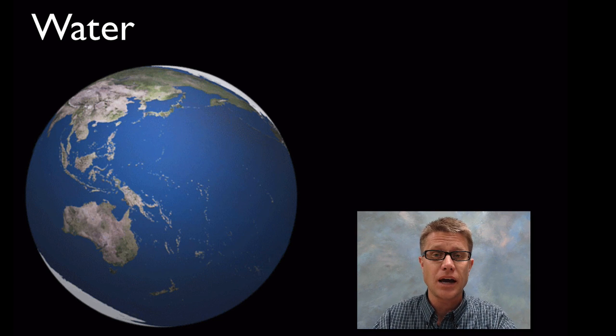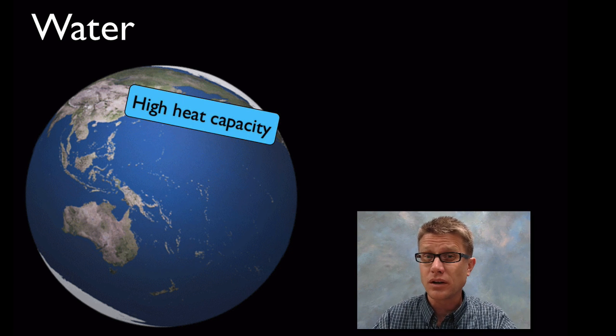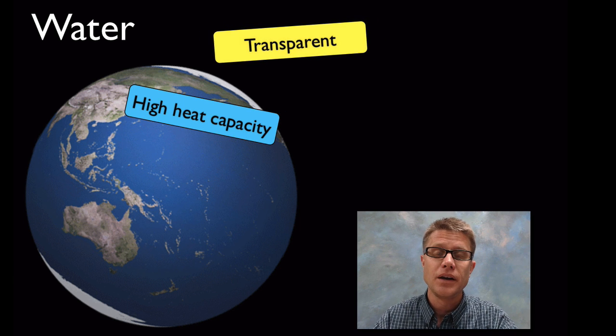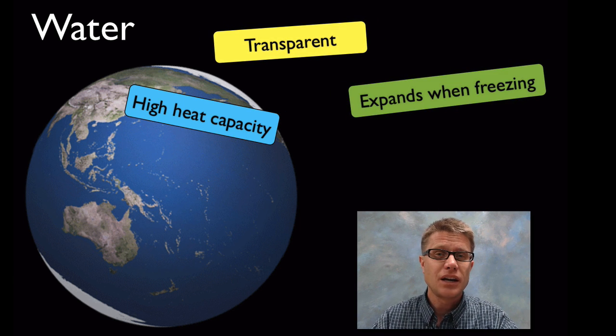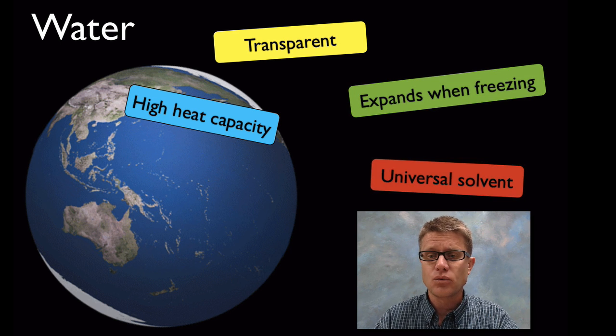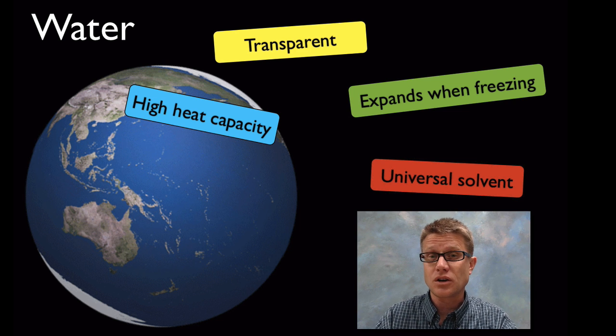And water is really unique as a molecule. It has high heat capacity. That means it can store a lot of energy. And as it changes phases it can release energy as well. It's transparent so light can move through it. It expands when it freezes. When it gets colder it actually gets bigger which is unique in the world. It's a universal solvent. That means it's really good at dissolving material. Breaking it down and transporting it.